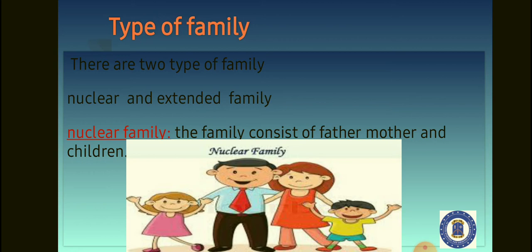Now I'll be explaining the nuclear family. The nuclear family consists of the father, the mother, and the children. This is the family most of us have — just your father, your mother, you and your siblings. When you look at the screen, you see the picture of the father, the mother and their children, which is the boy and the girl. That is the nuclear family.